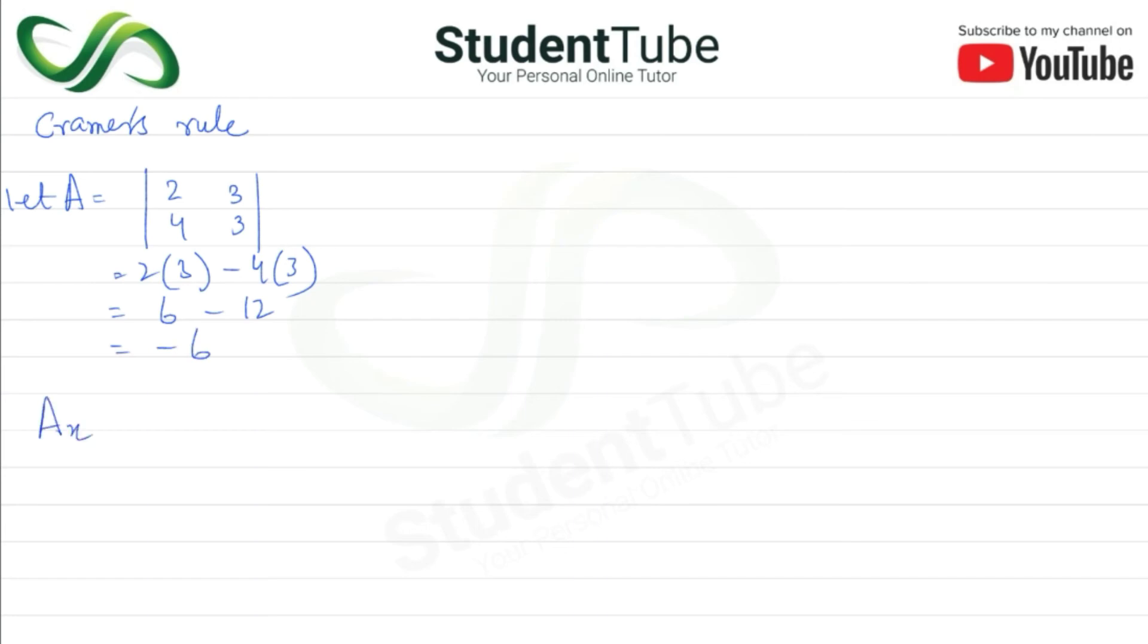Now ax is equal to minus 3, 5, 3, 3. Minus 3 multiply by 3 minus 5 multiply by 3. So 3 threes are 9 minus 5 threes are 15. So ax kya ho gaya? 24.